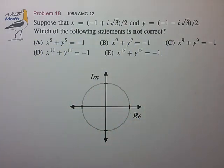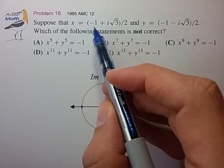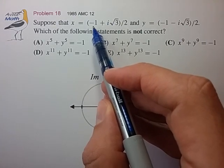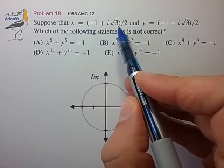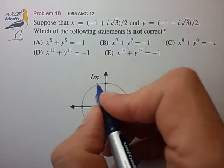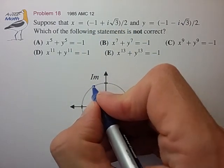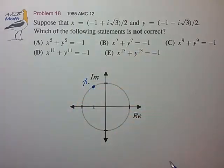Alright, we're given these two numbers, so it looks like the first task is to figure out exactly where these are located on the complex plane. So we see they both have a real component of -1/2. And for x, the imaginary component is √3/2. So that would place it right about here on the unit circle.